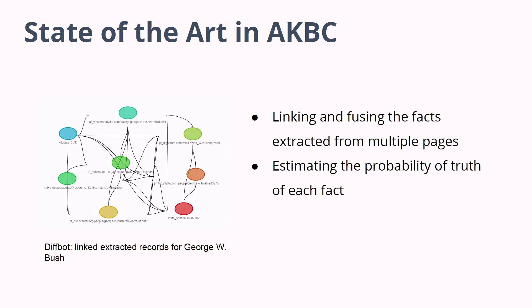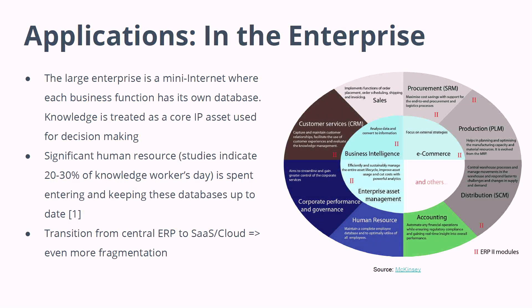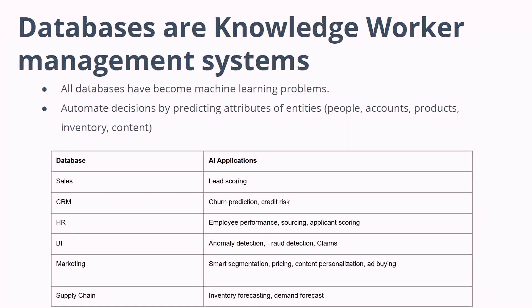We link and fuse the facts together and estimate the probability of truth. Inside the enterprise, databases are knowledge worker management systems. Each of these different business functions — sales, recruiting, HR, business intelligence, marketing, supply chain — essentially has their own silo of data that can be enriched with information from the DiffBot Knowledge Graph.